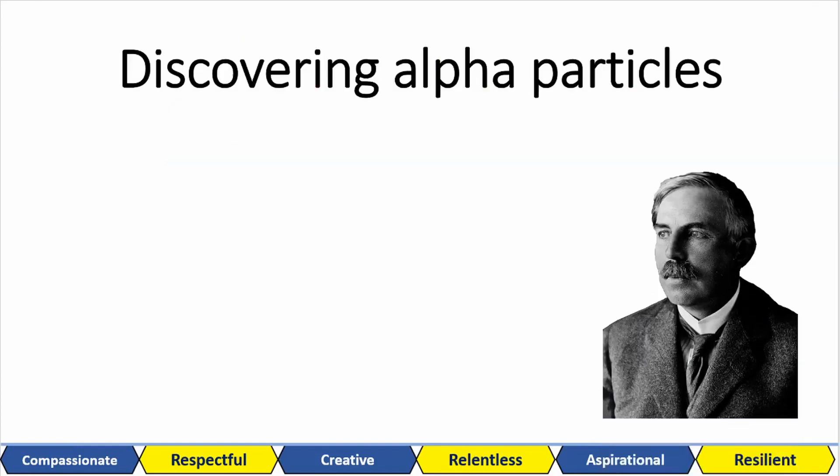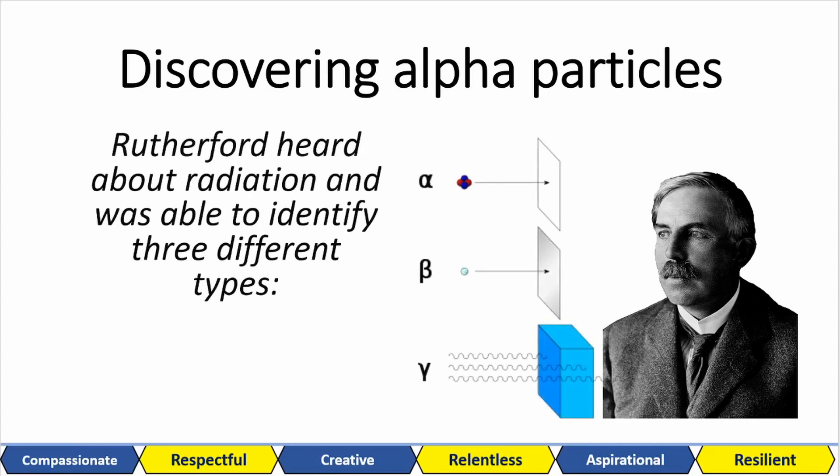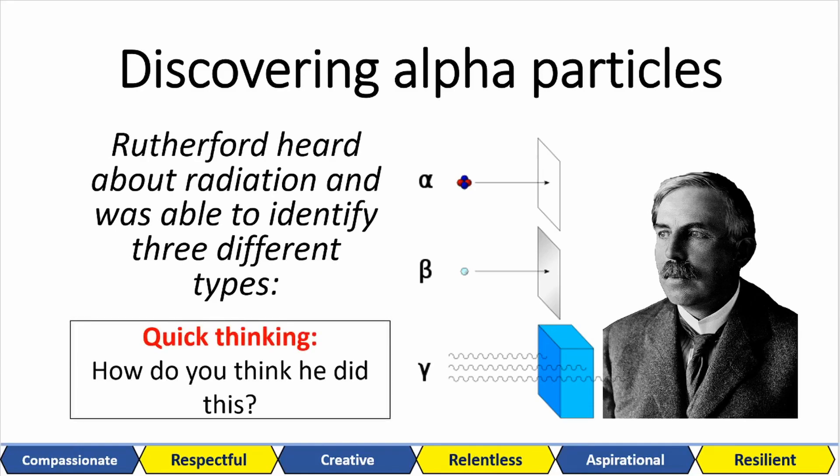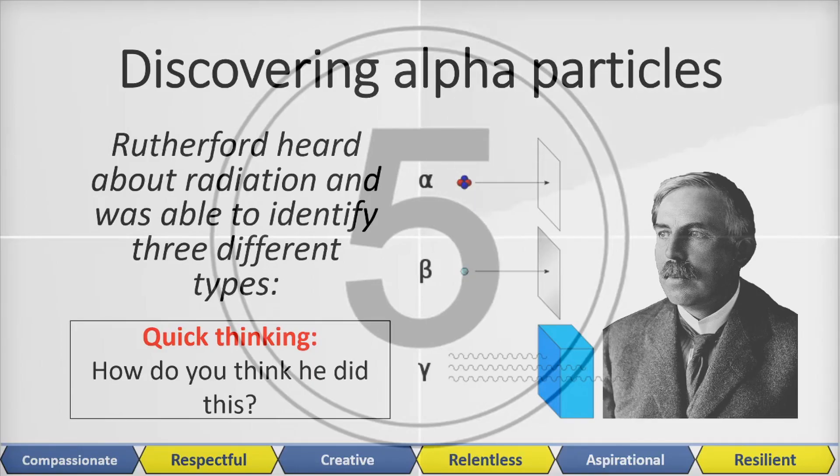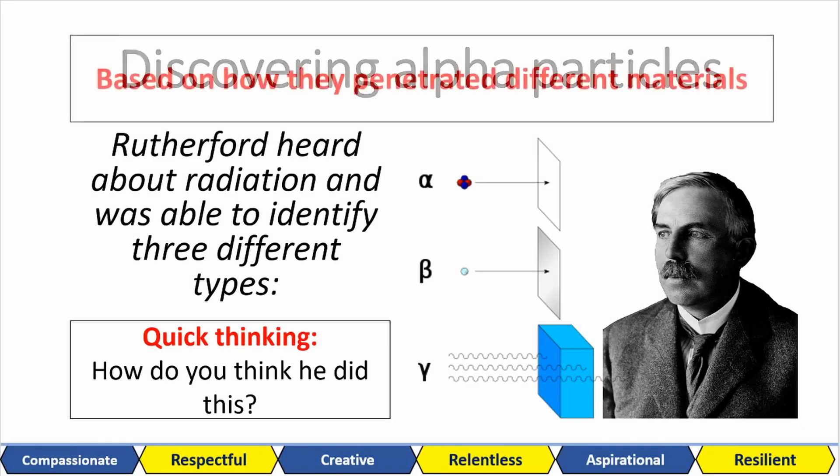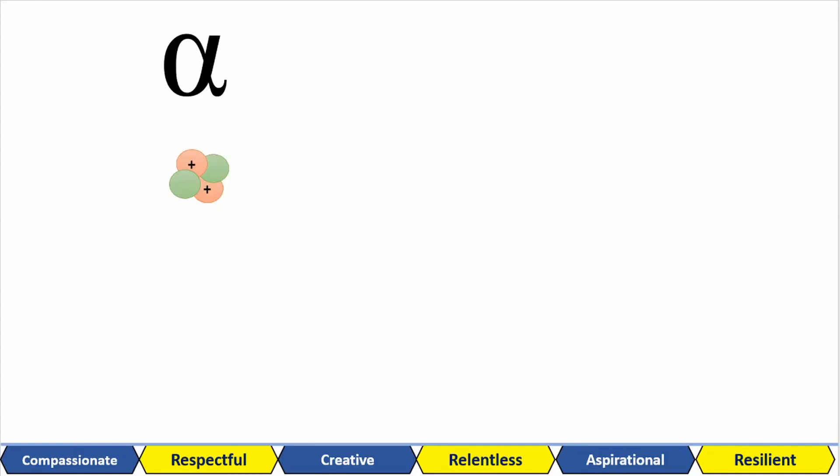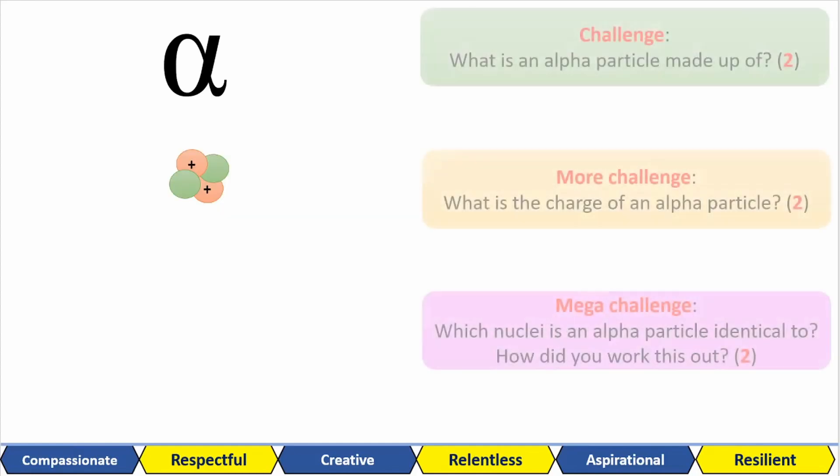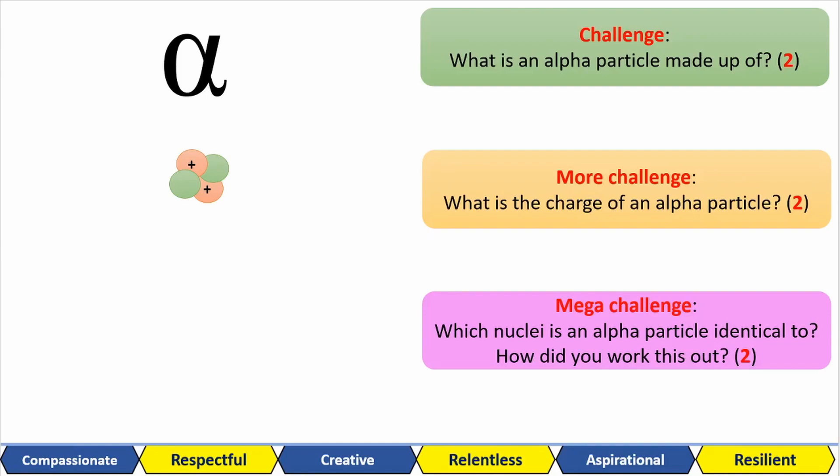Now we can move on to alpha particles and how they were discovered. Ernest Rutherford heard about these invisible radiations, and he was able to identify three types of radiation. Look at this image. How do you think he was able to work out that there were three types? This was based on the penetrative power. Here is an alpha particle. Now, have a go at these challenge questions.